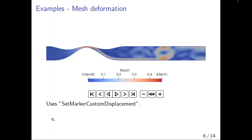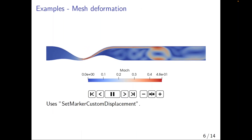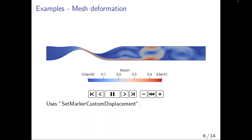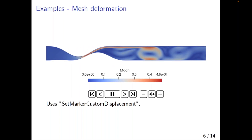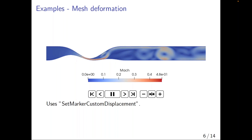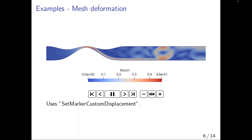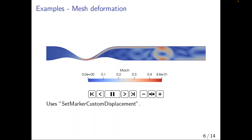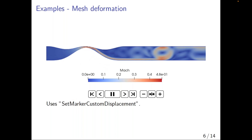You can also do wacky mesh deformation, just for the sake of showing videos at a conference. The things that let you change the boundaries are usually called marker custom — temperature, heat flux, displacement. We try to be consistent so that you have a consistent theme for functions that do similar things.